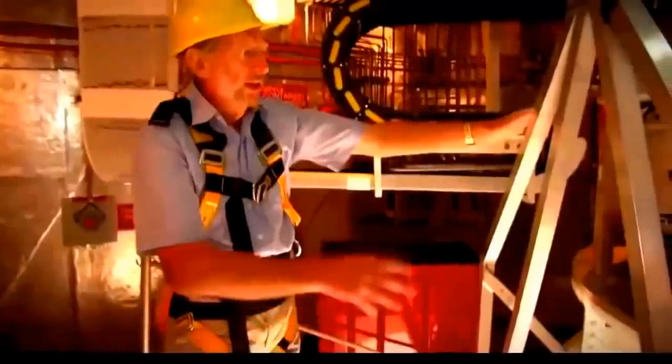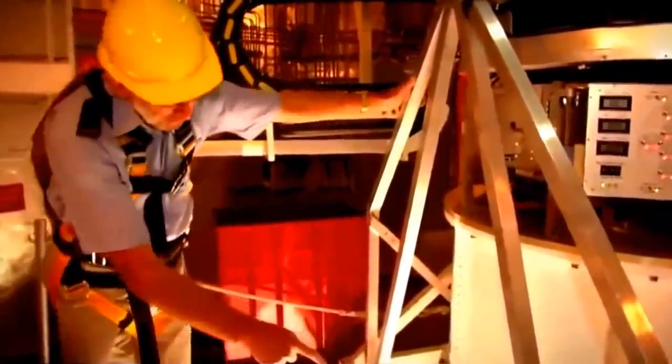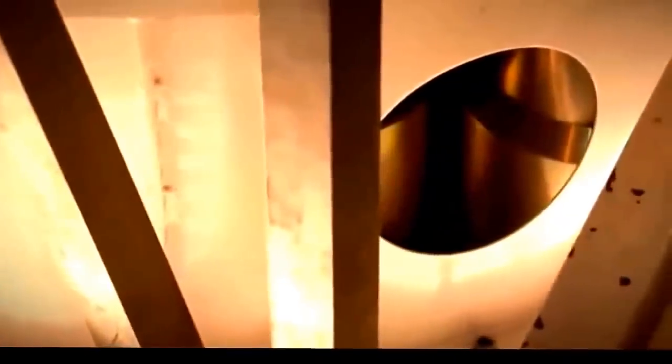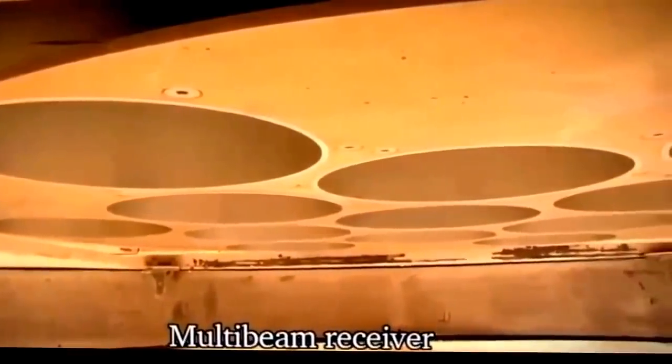So this is the multi-beam receiver. It has 13 beams. You can just see the feed horns through these panels. Each of the 13 elements in the array collects radio waves from a different direction.